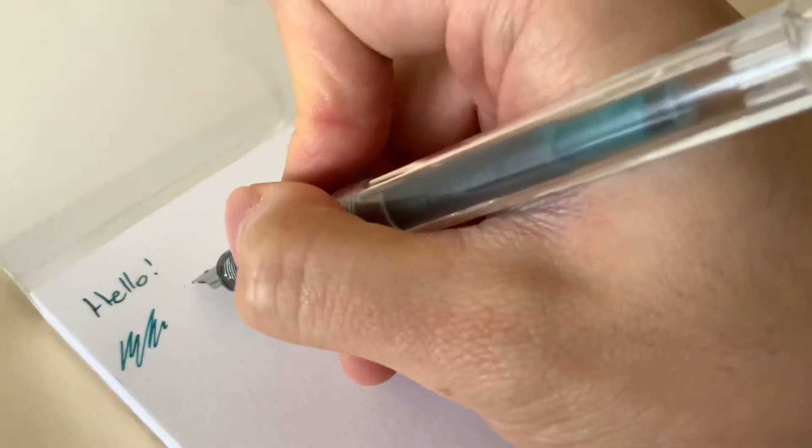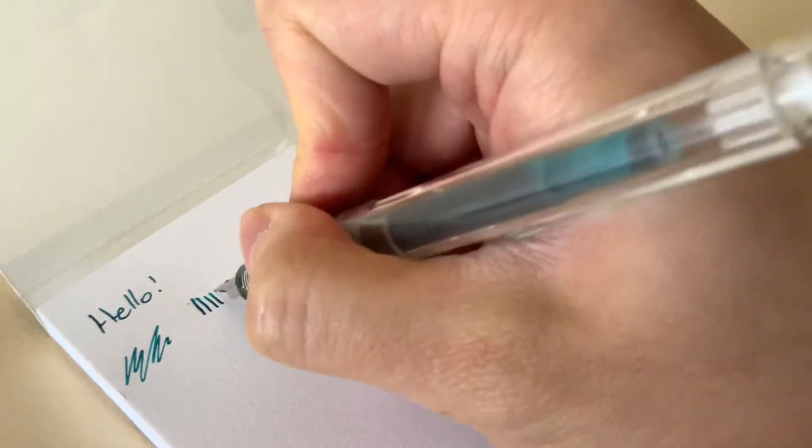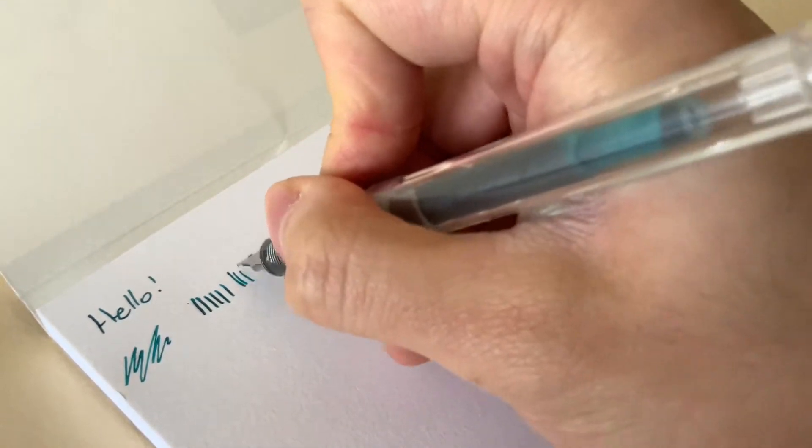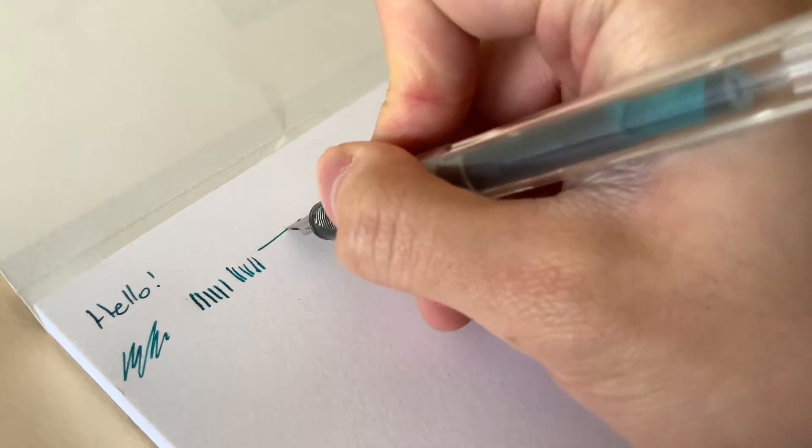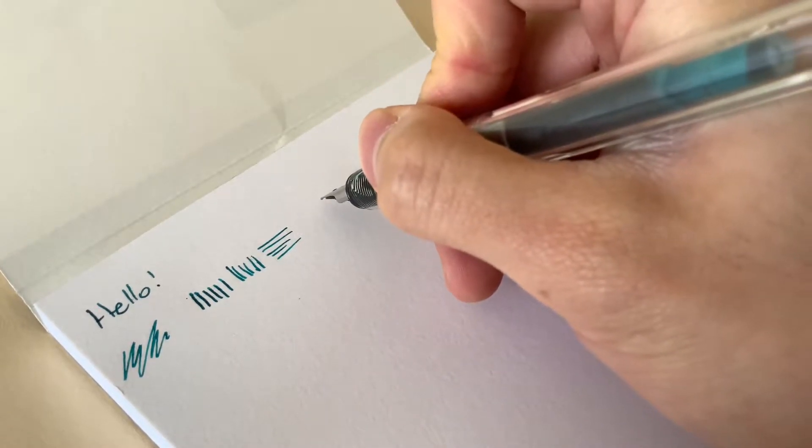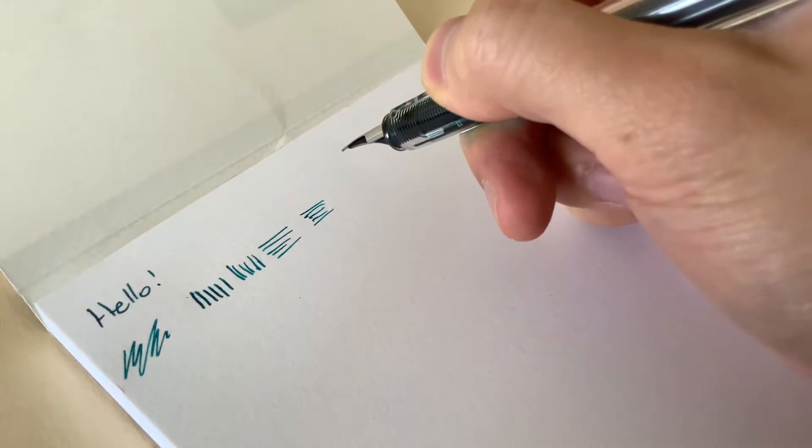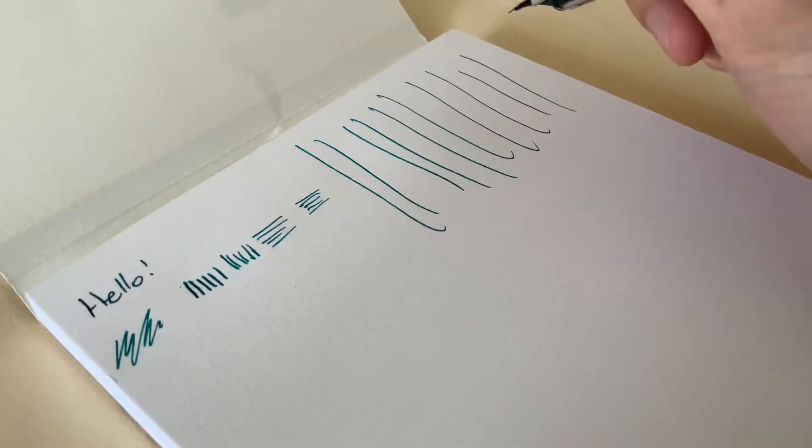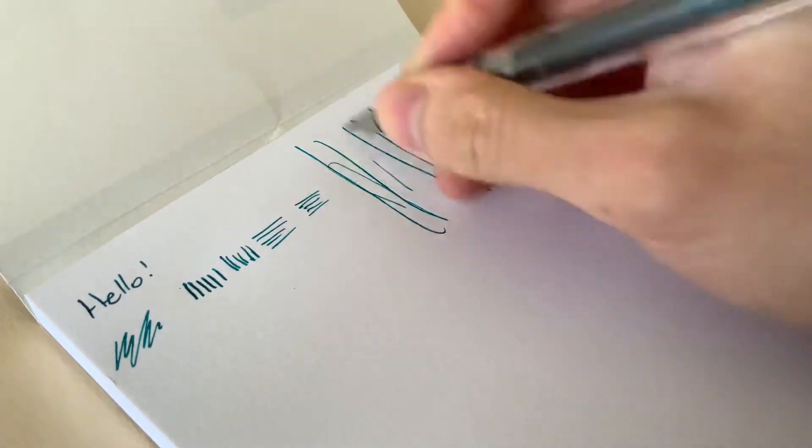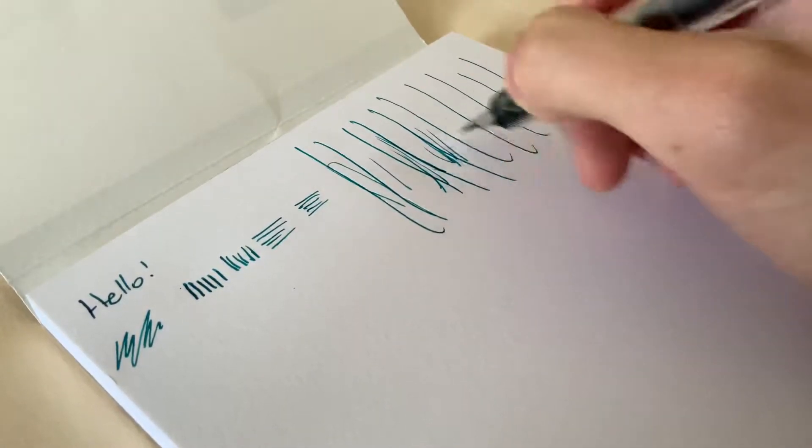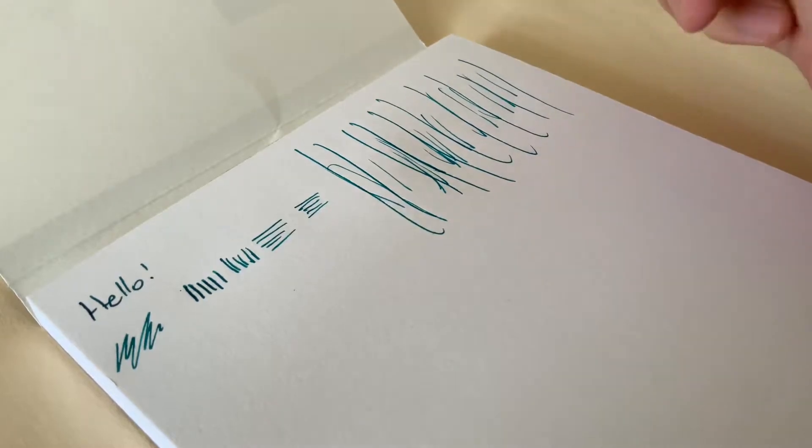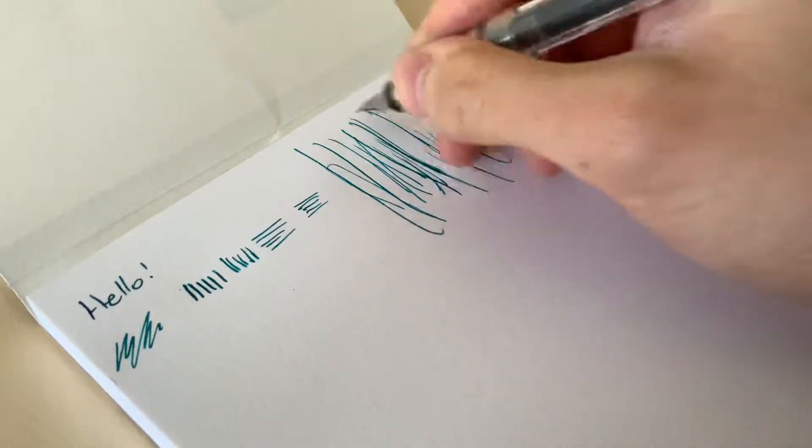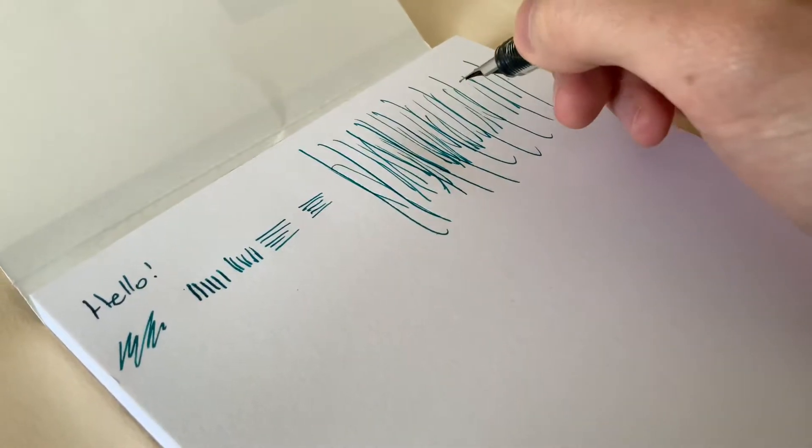So let's try with some downstrokes. Upstrokes. To the right. To the left. The question is, does it skip? No. Does it skip upwards? Well, no, it doesn't. But there's a lot more friction. But I wouldn't say so.